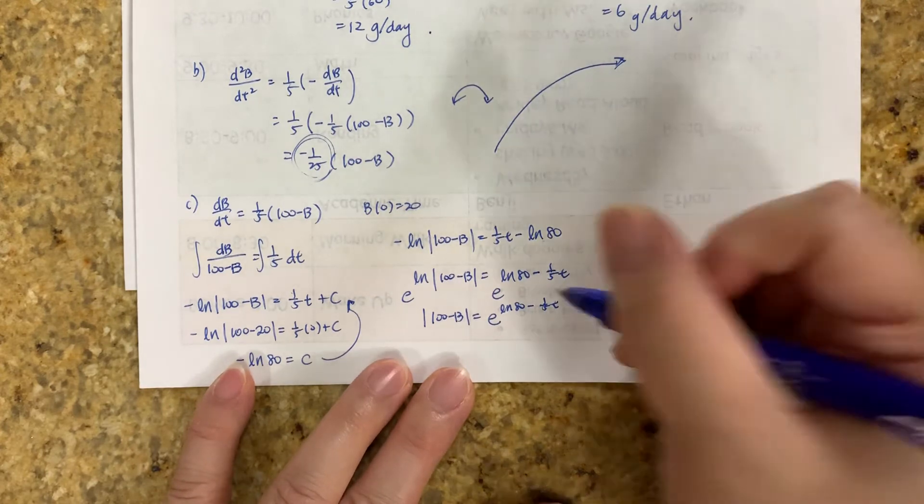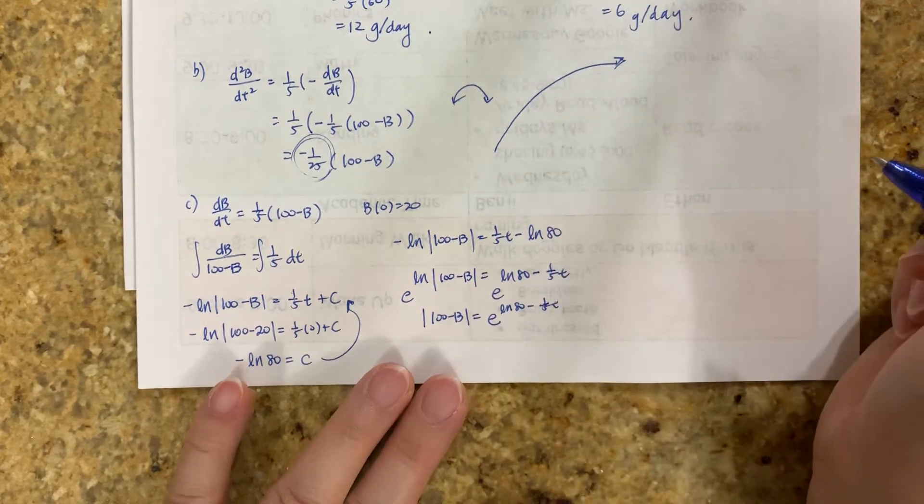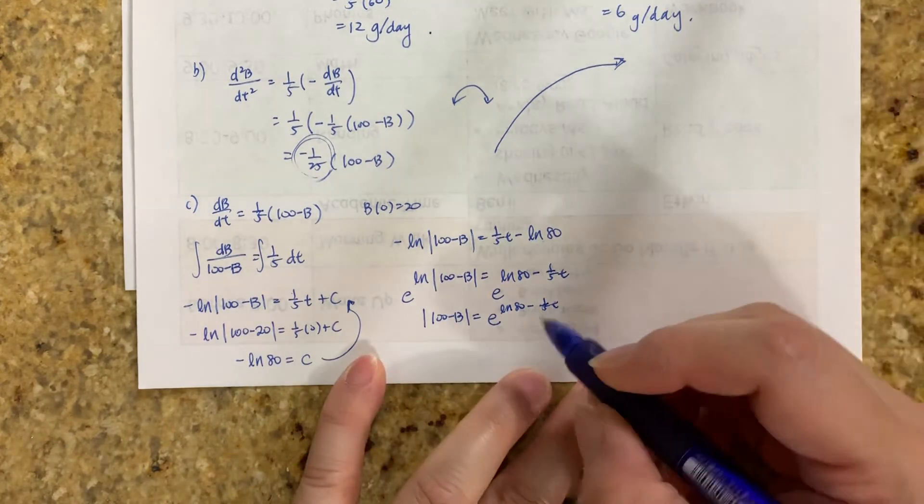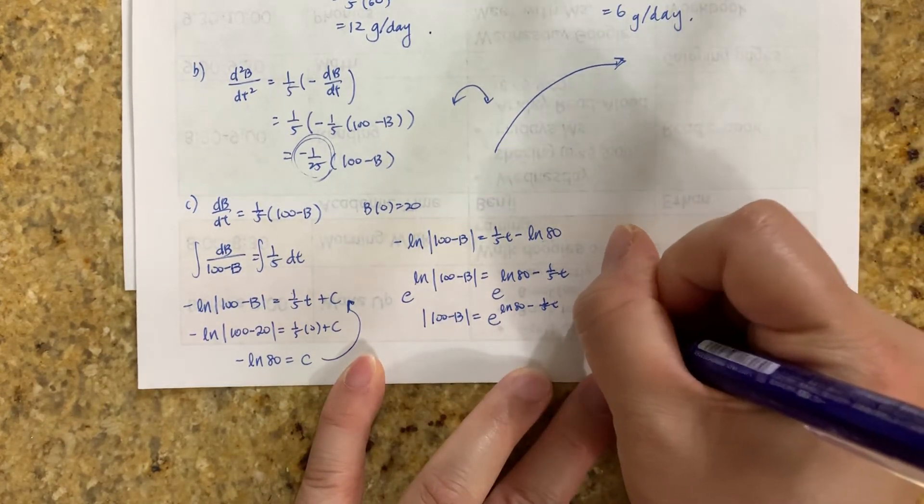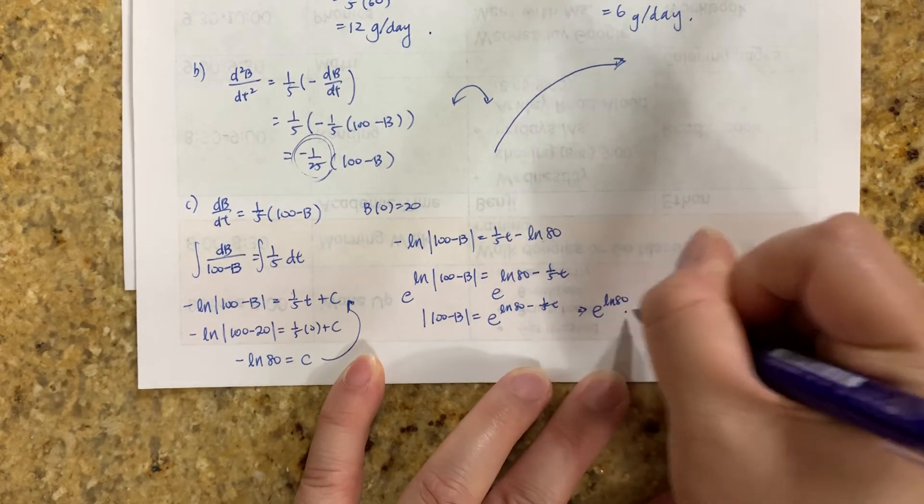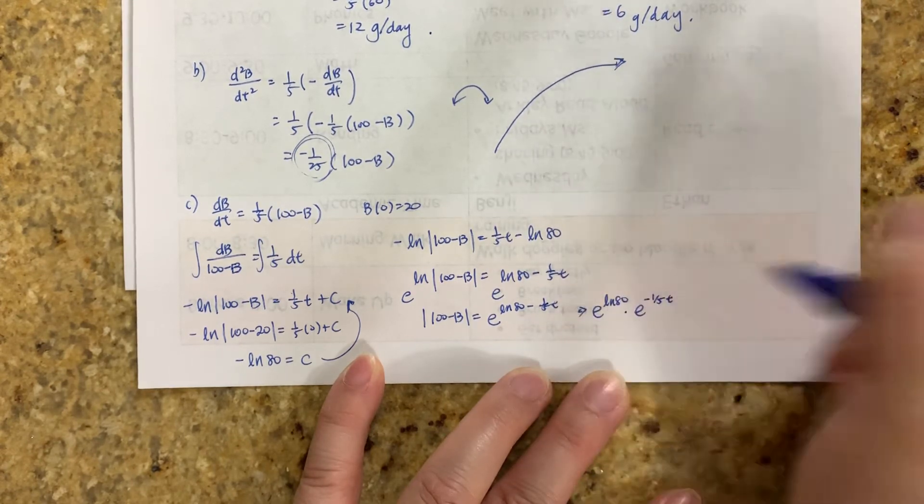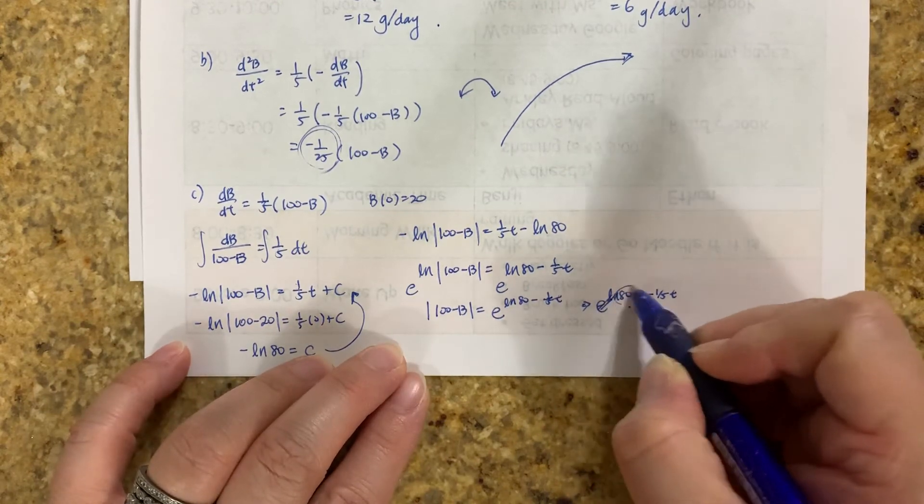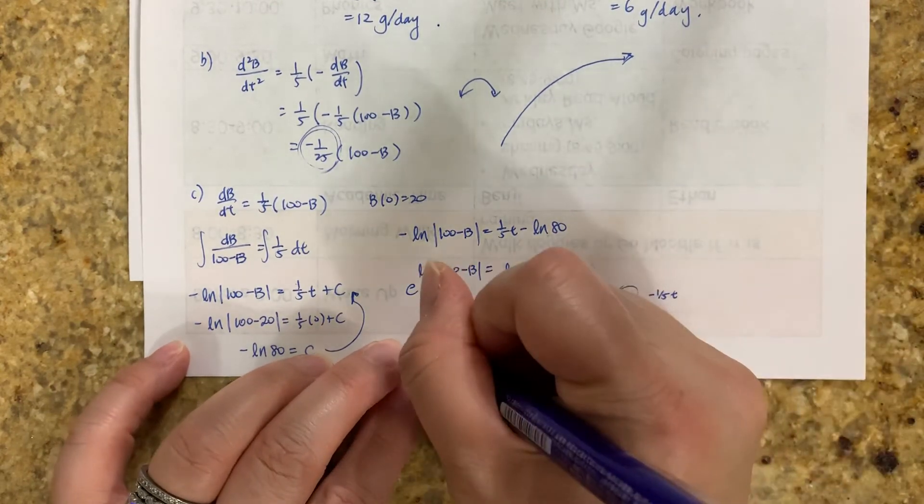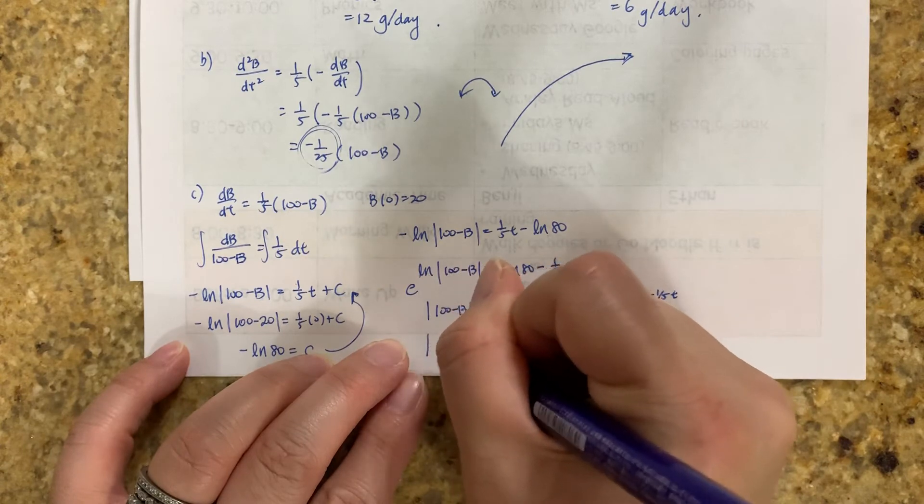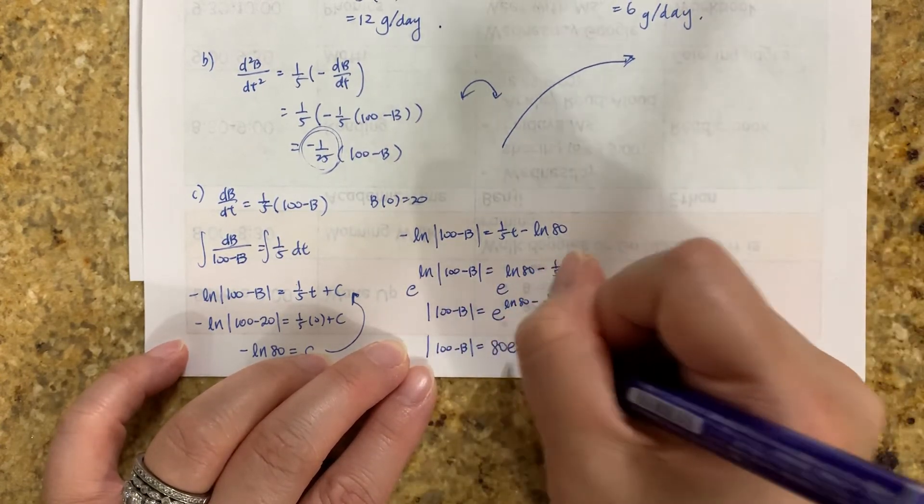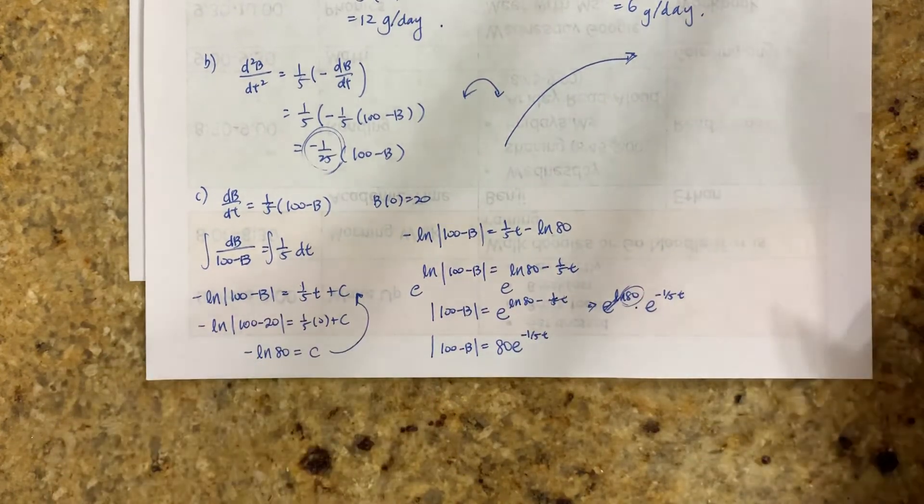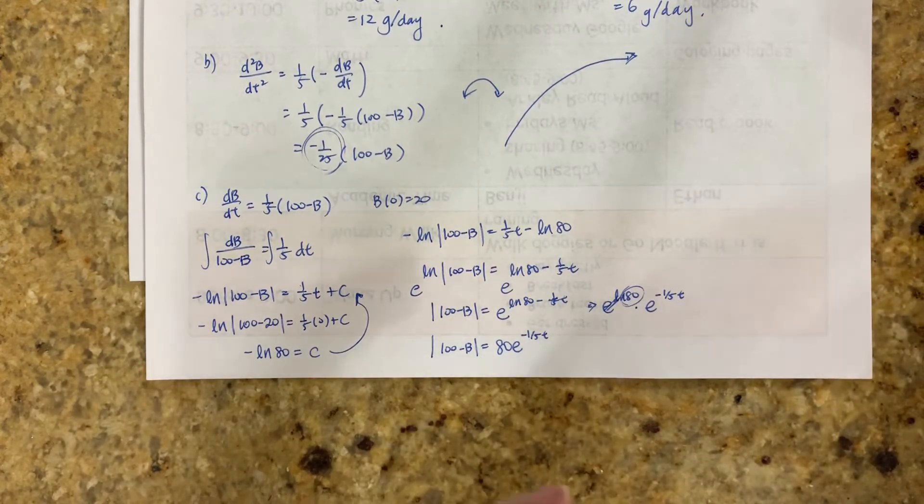So absolute value of 100 minus b equals e to the natural log of 80 minus 1/5 t. So again, you have to be flexible enough to know what this means. It means that you have two variables here. This is really e to the natural log of 80 times e to negative 1/5 t. Why do I want to do that? Because this cancels out and brings out 80 as a coefficient. So you really have absolute value of 100 minus b equals 80 times e to negative t over 5. Or t over 5.